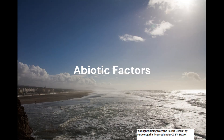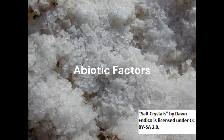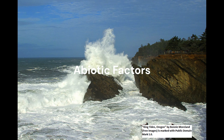Abiotic factors are the non-living components of an ecosystem that influence the organisms living within it. They include physical characteristics such as temperature, sunlight, water availability, and soil composition, and they determine which organisms can survive and thrive in a particular ecosystem. In the marine biome: sunlight is essential for photosynthesis in marine plants and algae, providing energy for the ecosystem; the marine biome has high salt concentrations due to dissolved salts in seawater, affecting species distribution; and the rise and fall of tides influences the movement of water, nutrient availability, and behavior of marine organisms.